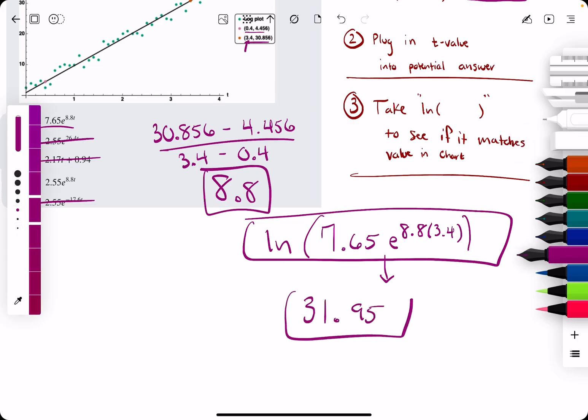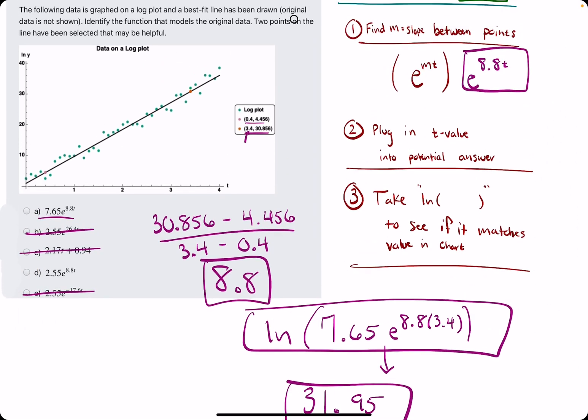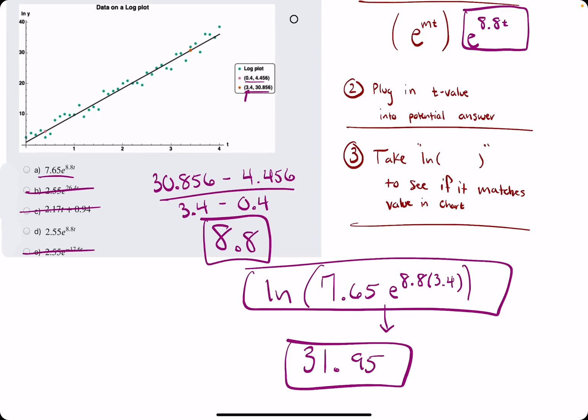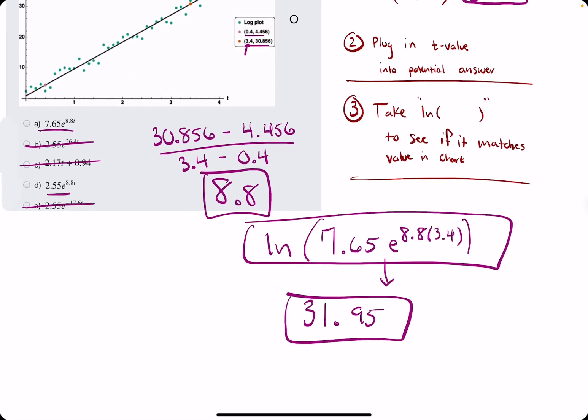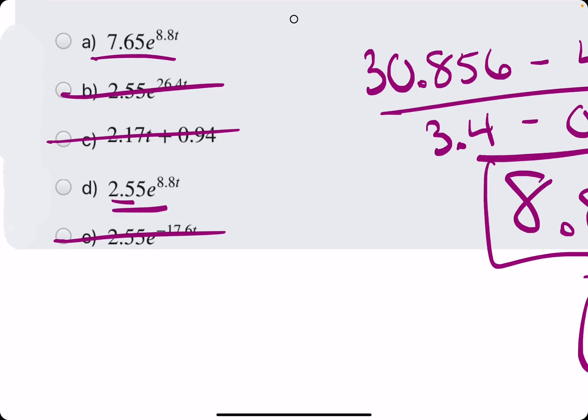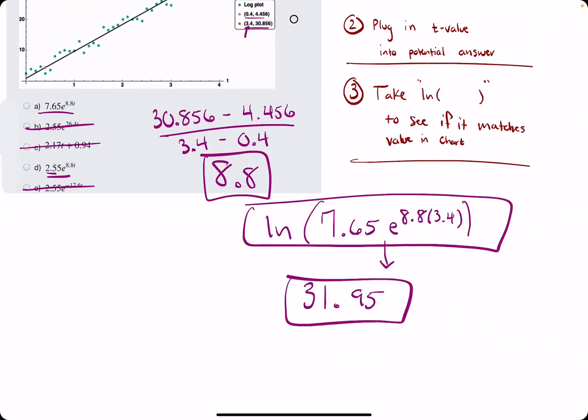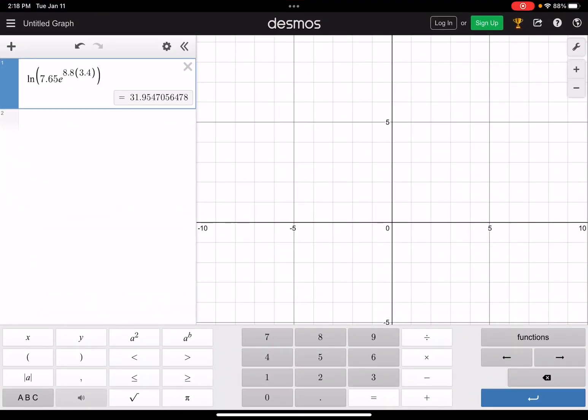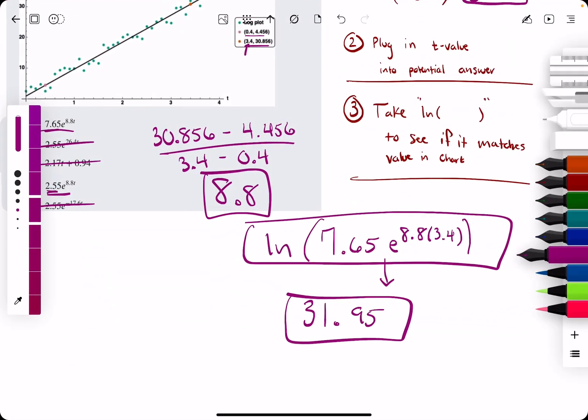So 31.95, and that should correspond to this value here. And it's surprising. It's very close, but it's not quite it. So let's go ahead and try option D, and all we'll have to do is change that coefficient 2.55, or I guess 7.65 to 2.55, and see if it gives us a closer result. So let's go ahead and change 7.65 to 2.55, and it gives us 30.86, or 856, exactly.